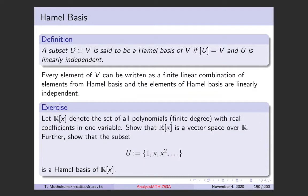As an example, consider the one-variable polynomials. R[x] denotes the set of all polynomials with real coefficients in one variable. It is easy to show this is a vector space over R. The subset {1, x, x², x³, ...} is the Hamel basis of this set of all polynomials.